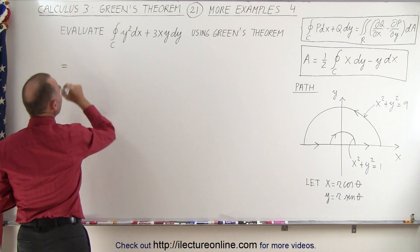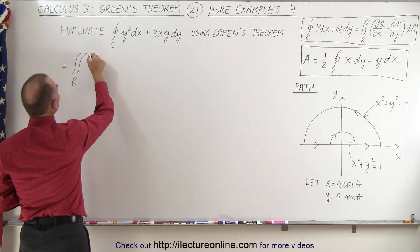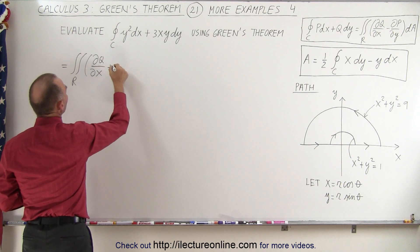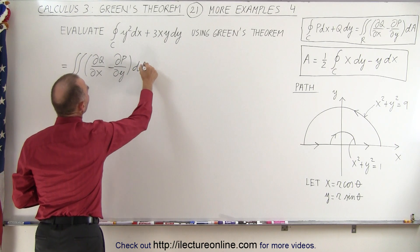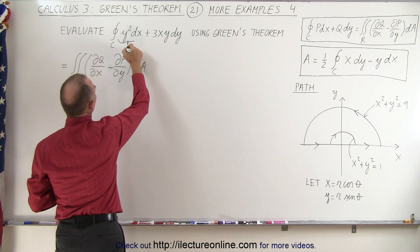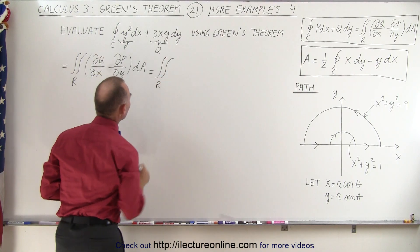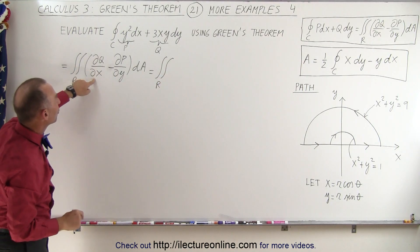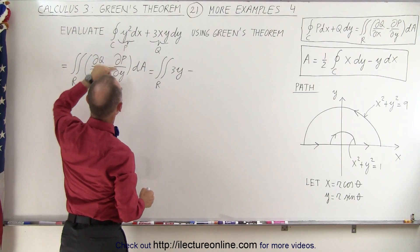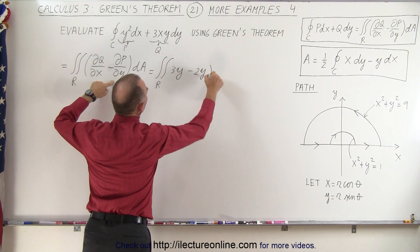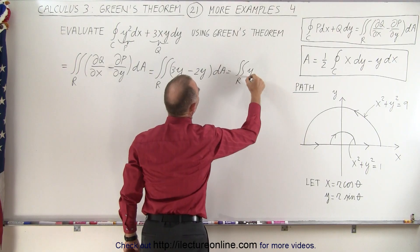So that means this is going to be equal to the double integral over the enclosed region of the partial of q with respect to x, minus the partial of p with respect to y, times dA — realizing that this here is our p and this here is our q. So this becomes equal to the double integral over the region enclosed by the path of the partial of q with respect to x, which gives us 3y, minus the partial of p with respect to y, which gives us minus 2y, times dA. So this then becomes the double integral over the region of y dA.